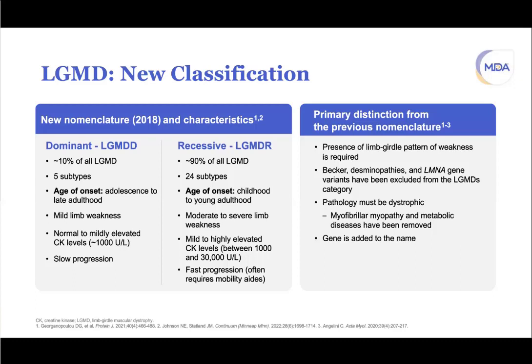Becker muscular dystrophy, historically lumped into LGMD, is no longer part of this category — it now belongs to the dystrophinopathies. Desminopathy, a myofibrillar myopathy, is also excluded. Similarly, LMNA variants, which have huge phenotypic variation, have been excluded from the LGMD category. Going forward, the gene name is added to the disease designation.